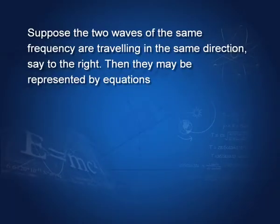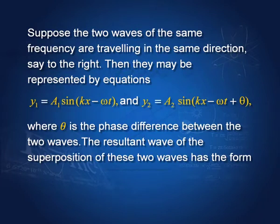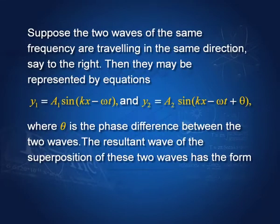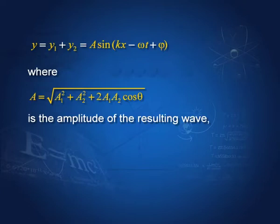Now let us do these things mathematically. Suppose two waves of the same frequency are traveling in the same direction. Then they may be represented by: y₁ = A₁ sin(kx − ωt) and y₂ = A₂ sin(kx − ωt + θ), where the two waves may differ in phase by an angle θ. The resultant displacement is y = y₁ + y₂, which using trigonometry can be written as y = A sin(kx − ωt + φ). The amplitude A is given by A² = A₁² + A₂² + 2A₁A₂ cos θ. The amplitudes are added as vectors.